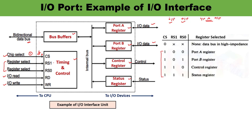RS0 and RS1 provide four possible combinations: 0,0 selects port A register; 0,1 selects port B; 1,0 selects the control register; and 1,1 selects the status register. So depending upon the input combination on the register select lines, one register among the four is selected. If there were eight registers, three register select lines would be required, as three lines give eight possible combinations.